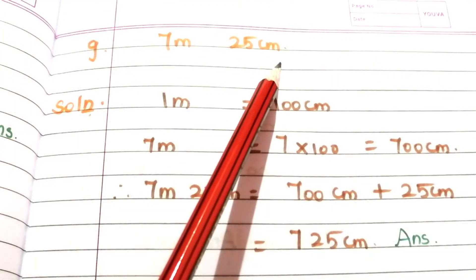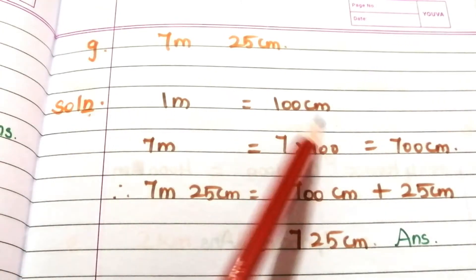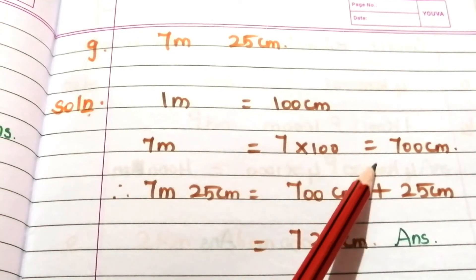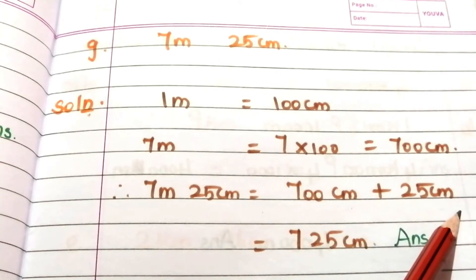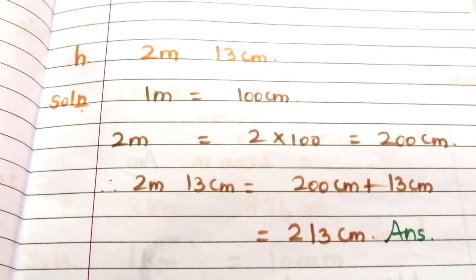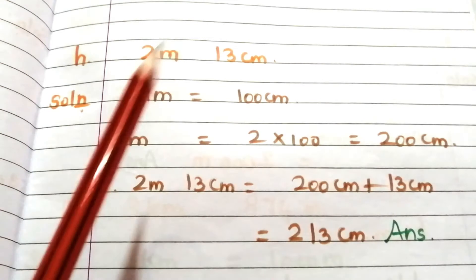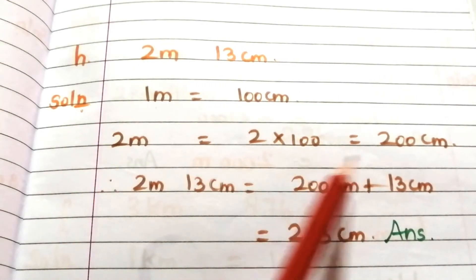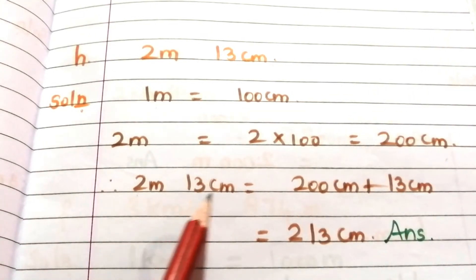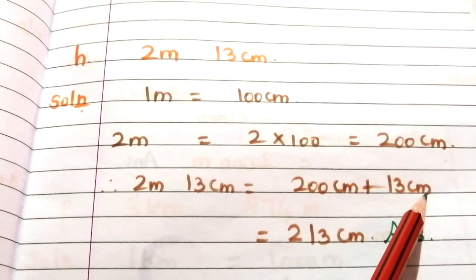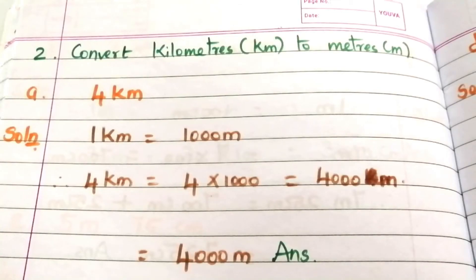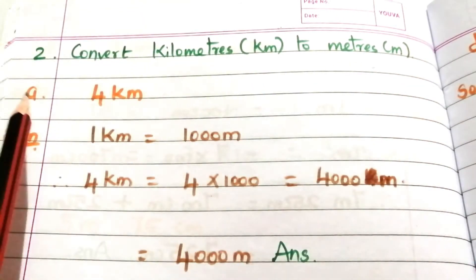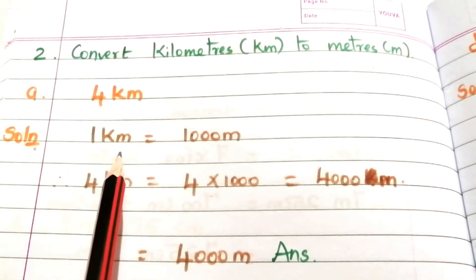Problem G: 7 meters 25 centimeters. 1 meter equals 100 centimeters, therefore 7 meters equals 700 centimeters. So 7 meters 25 centimeters equals 700 + 25 = 725 centimeters. Problem H (last meter-to-centimeter problem): 2 meters 13 centimeters. 2 meters equals 200 centimeters, therefore 2 meters 13 centimeters equals 200 + 13 = 213 centimeters.